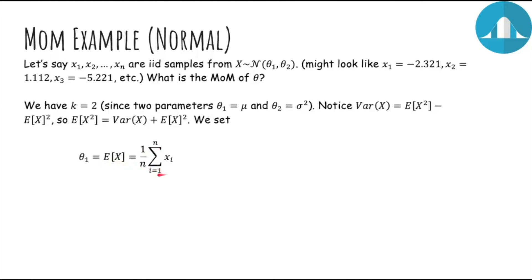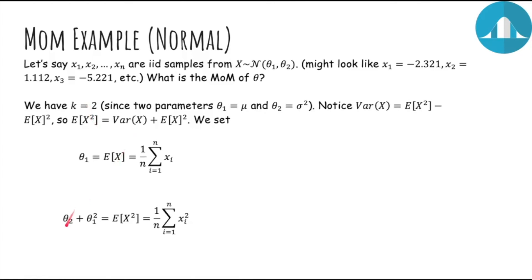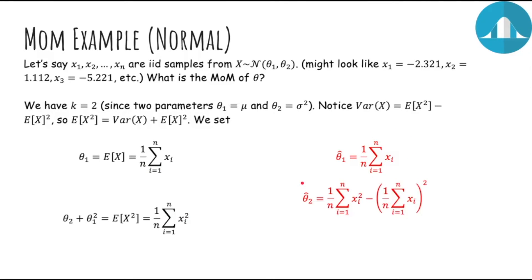The first true moment E of x should equal the first sample moment, and since theta 1 is the mean, theta 1 hat equals the sample mean. For the second equation, the second true moment E of x squared should equal the second sample moment. We already derived that E of x squared is the variance of x — the second parameter theta 2 — plus the mean squared, theta 1 squared. Solving these, theta 1 hat is just the sample mean, and theta 2 hat is the second sample moment minus the sample mean squared, which gives 1 over n times the sum from 1 through n of xi minus the sample mean squared. This is the same as the maximum likelihood estimate for the Gaussian.